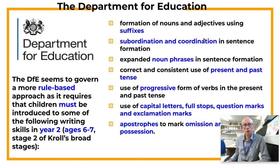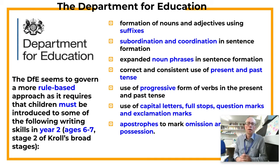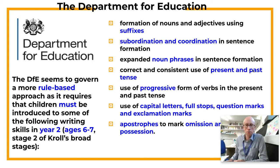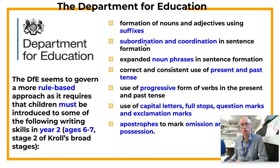If we look at the Department for Education's website and see what they say that Key Stage 2 children — i.e. 8-year-olds to 11-year-olds — should be doing, it appears to be pretty much a rule-based approach, as it's requiring children to be introduced to the following skills. Cast your eye down this formidable list: formation of nouns and adjectives using suffixes, so children are expected to know the basics of morphology. At Key Stage 2, we have subordination and coordination in sentence formation, which essentially means the ability to construct compound and complex sentences.